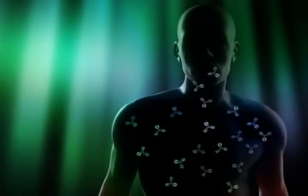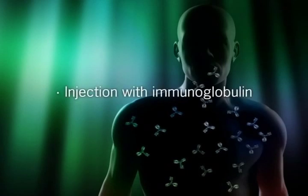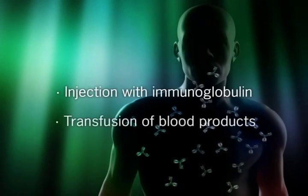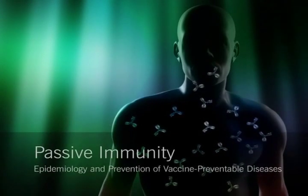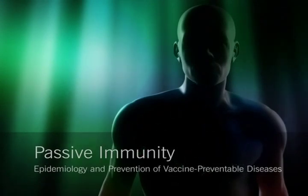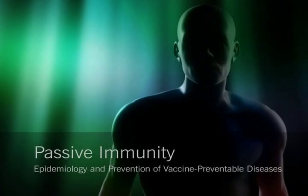Maternally acquired immunity is only one type of passive immunity. Injection with immune globulin or disease-specific globulin, or transfusion of blood products, are other ways of conferring passive immunity. But passive immunity, no matter how acquired, is always temporary. Active immunity—either from infection with the disease-causing form of the organism or through vaccination—is the only way to become permanently immune to disease.